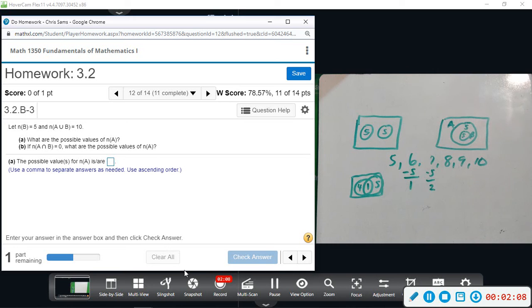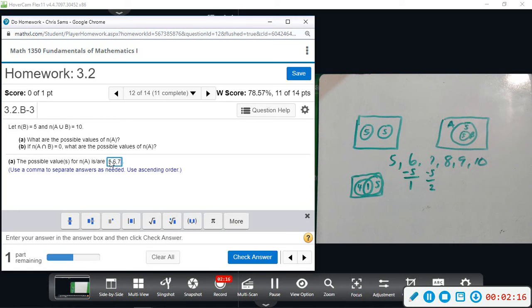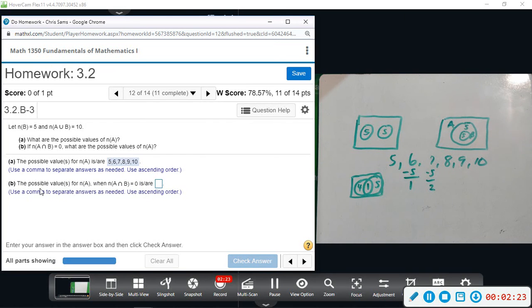Okay so 5, 6, 7, 8, 9, 10, we've done it already. Those are possibilities. And then possibilities for A if the intersection is zero, so that's this case right here, there's only one, it has to be five.